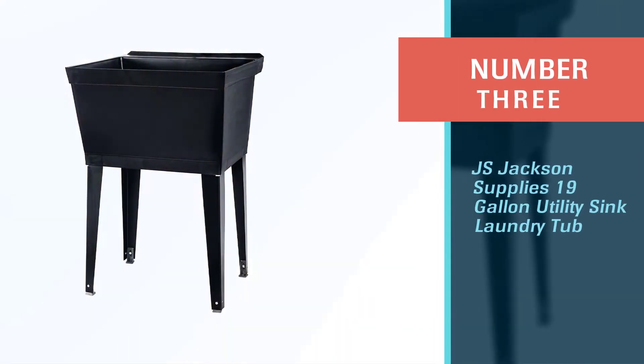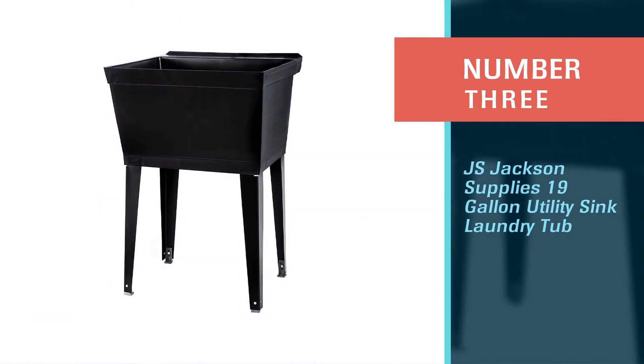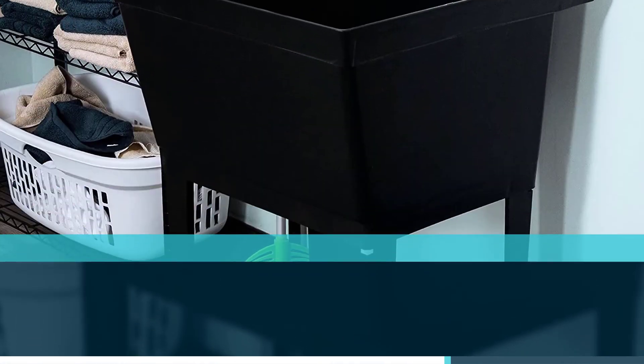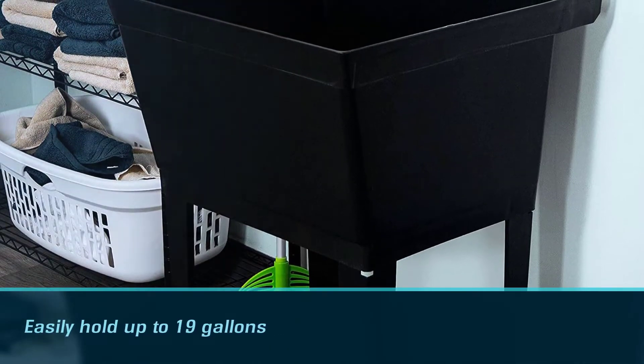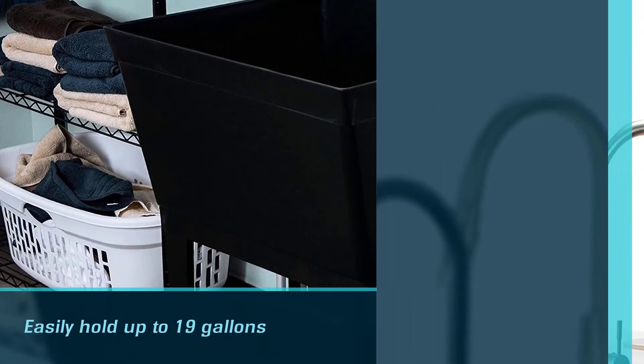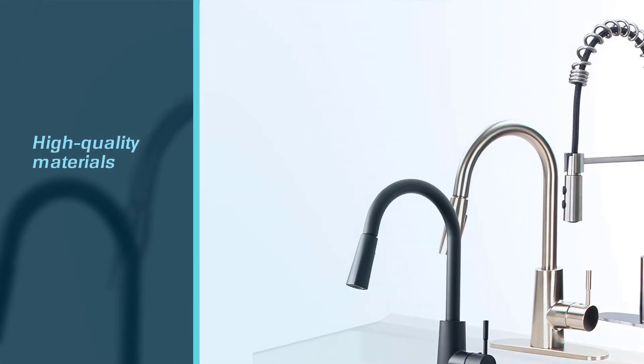Number three: JS Jackson Supplies 19 Gallon Utility Sink Laundry Tub. Perfect for your heavy-duty cleaning sessions, this sink can easily hold up to 19 gallons in one go. Each sink is built with sturdy metal legs.